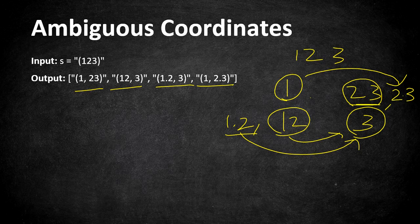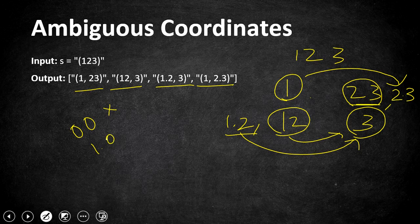Before getting into the approach, another rule from the problem statement is that there are no zero values accepted before and after decimals. If a digit is completely zero or '00', it cannot be accepted. If there is a zero after the decimal — for example '1.0', '2.0', or '21.0' — trailing zeros after decimal are not accepted. Similarly, a leading zero before continuous numbers is also not allowed.